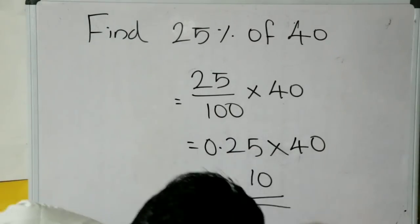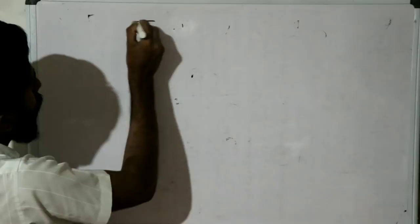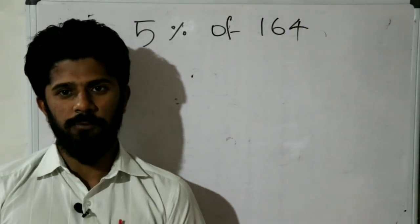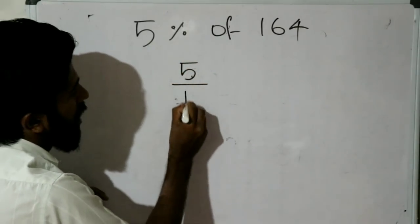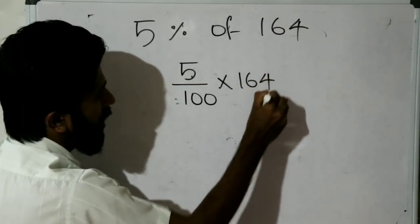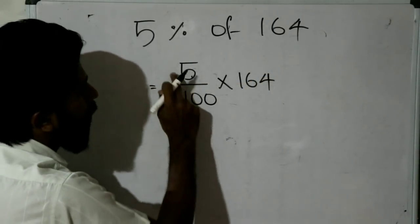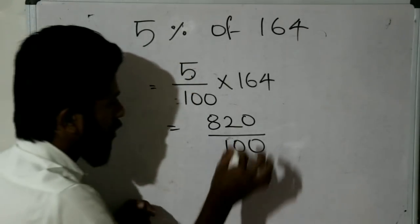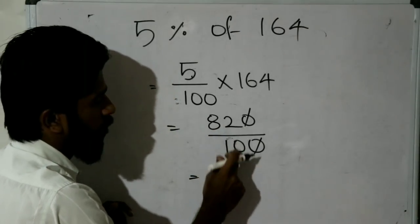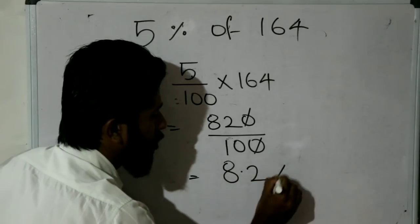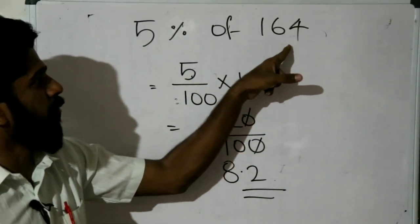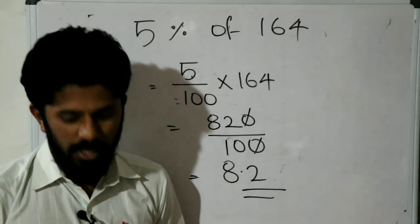Next: 5 percentage of 164. 5 divided by 100 into 164. 5 into 164 is equal to 820 divided by 100. Therefore: 82 divided by 10 is equal to 8.2 percentage. So 5 percentage of 164 is 8.2.